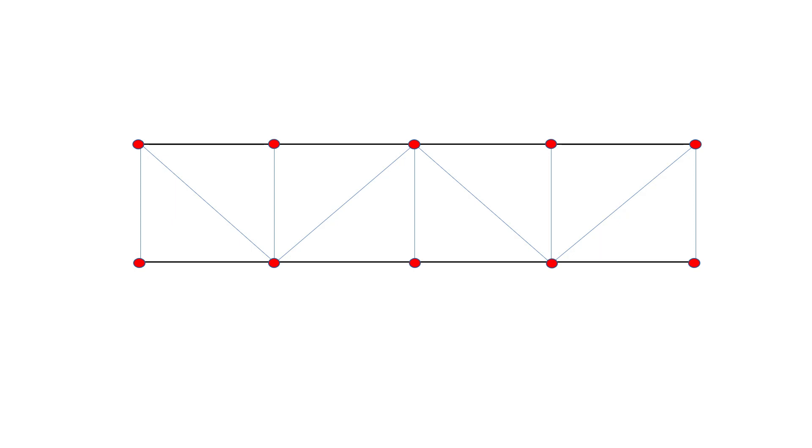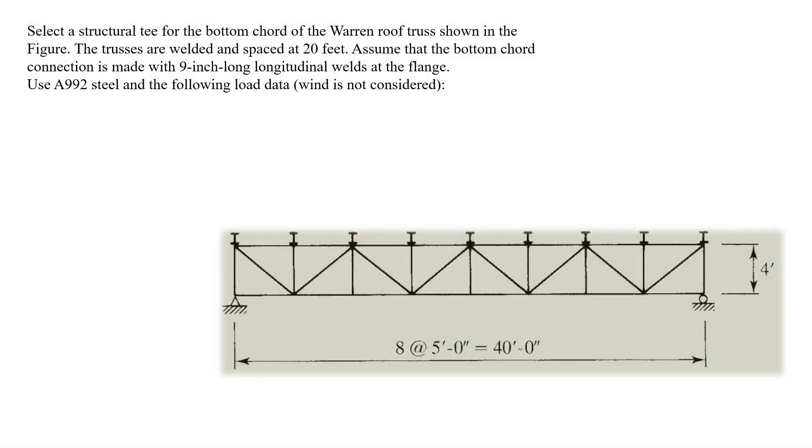Bending caused by loads directly applied to the members between the joints, however, must be taken into account. Let's design a bottom chord member of a truss.